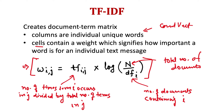If a term occurs very frequently in a document, the numerator — number of times i occurs in document j — will be high, divided by the total number of terms in j. So that term is occurring very frequently in that document compared to other words, making TF high. If the frequency of a word is high in a given document, this part is large. The denominator, which is the number of documents containing i, is in the denominator — so if a word is not very frequent in other documents, this value will be smaller.